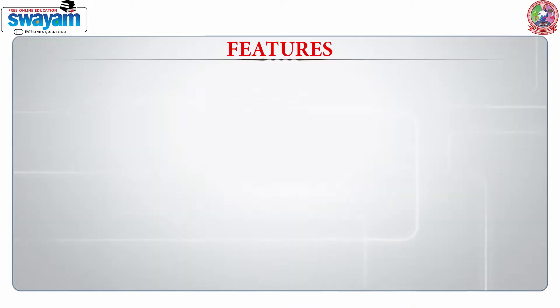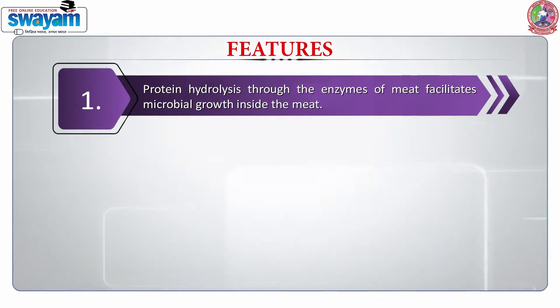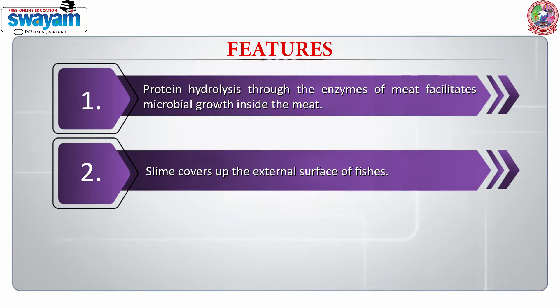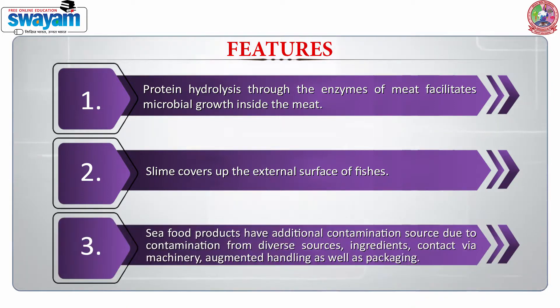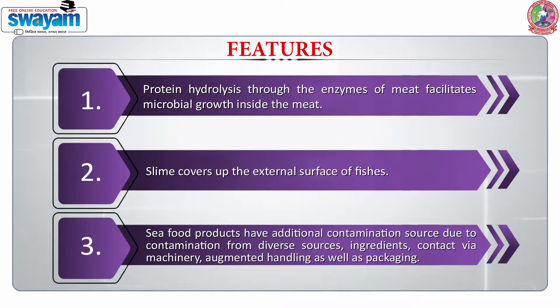When we talk about spoilage, there are certain features of this particular spoilage which takes place in meat. This happens due to protein hydrolysis and this is due to the enzymes which are present in meat, which facilitate the microbial growth inside the meat. At times, we also see the slime which is growing on the external surface of the fishes. In case of seafood, this will have an additional contamination source because we are using various types of ingredients in these products. We are also talking about various contact surfaces such as machinery, and it is also increased by the handling as well as the packaging equipment.